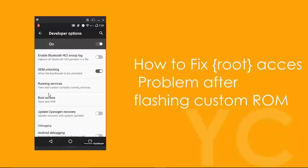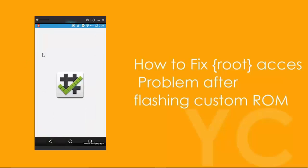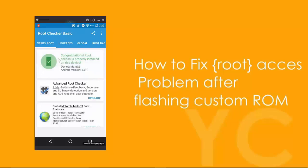Now go back and open the Root Checker app again. Click 'Verify Root' once more. You can see it now says: 'Congratulations! Root access is properly installed on this device.' We have successfully fixed the root access problem after flashing the custom ROM.